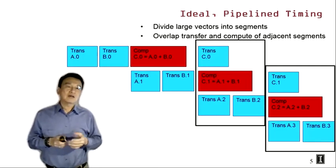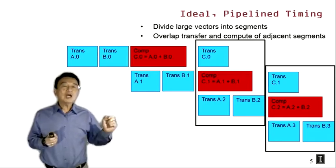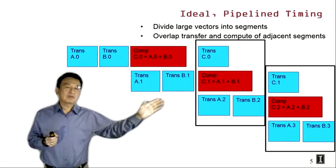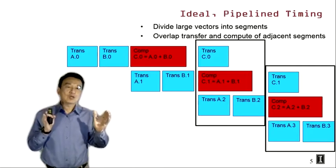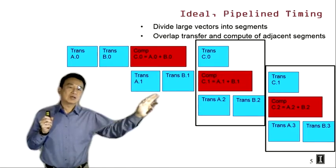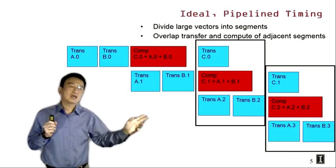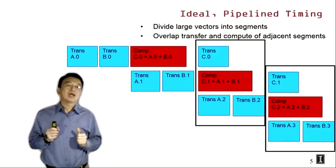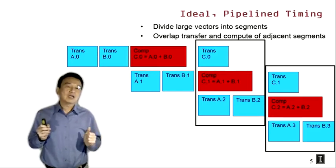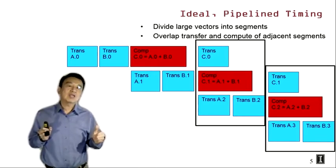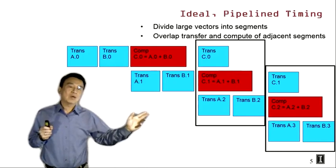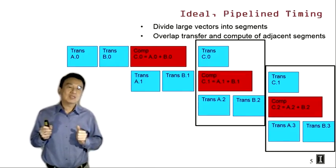The speedup we can get from this overlap depends on the relative length of time needed to transfer a segment versus compute a segment. If the transfer of A and B segment dominates, the total time for one period will be determined by that transfer time. We won't necessarily get three times speedup because the execution time won't be divided by three — rather, it's going to be determined by the longest of the three activities. This is called the critical path in a parallel execution.